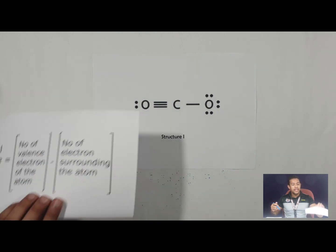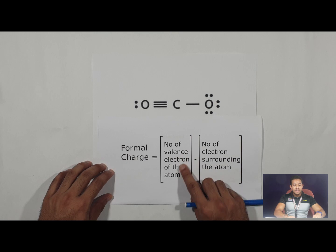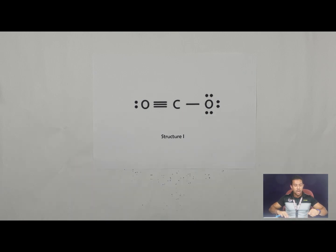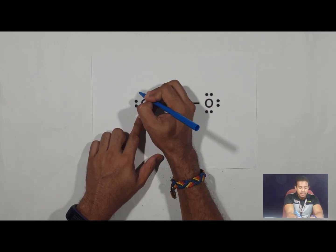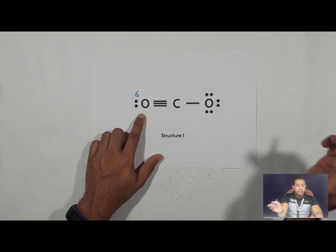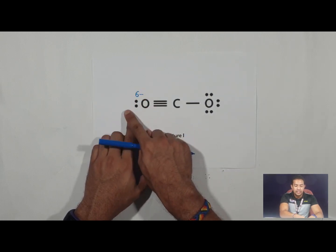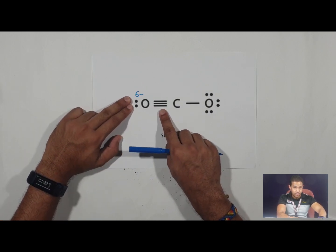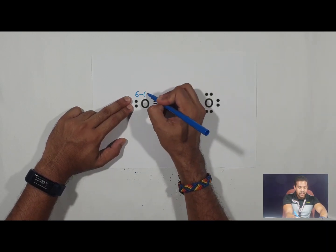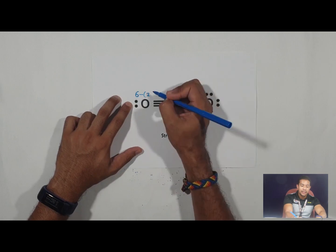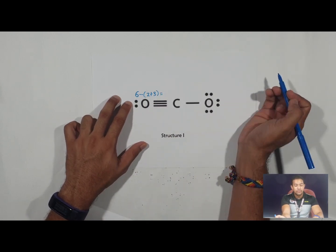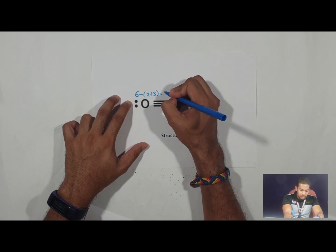Using the formula — valence electrons minus electrons surrounding the atom — let's look at the oxygen with the triple bond. Oxygen is in group 16, so it has six valence electrons. It has two lone pair electrons plus a triple bond contributing three electrons, so two plus three equals five. Six minus five equals positive one.